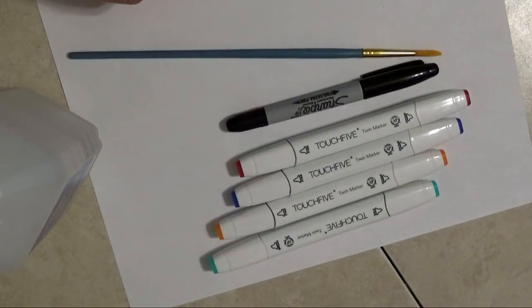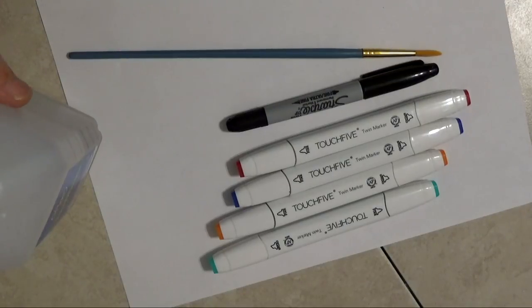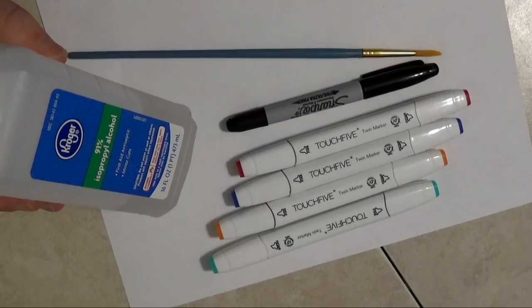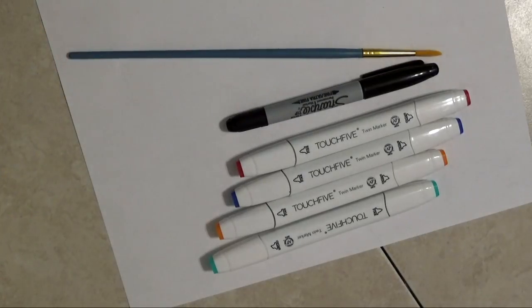To complete this project, you're going to need some tracing paper, a permanent marker. I used a Sharpie and I'll talk more about that later, and some alcohol ink markers. I'm using the Touch 5 markers. You'll also need a brush and some isopropyl alcohol.